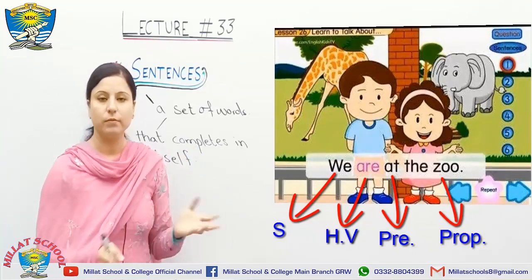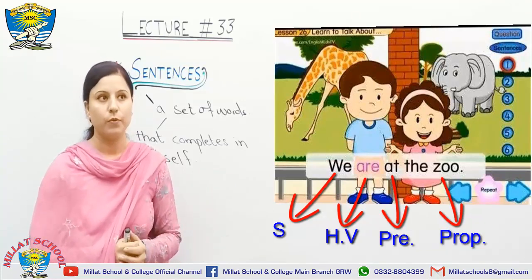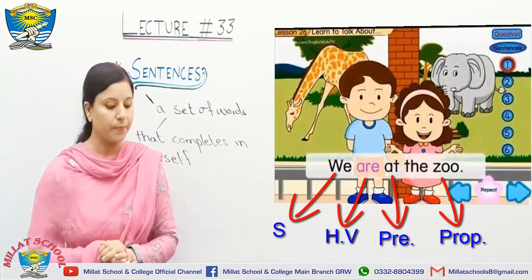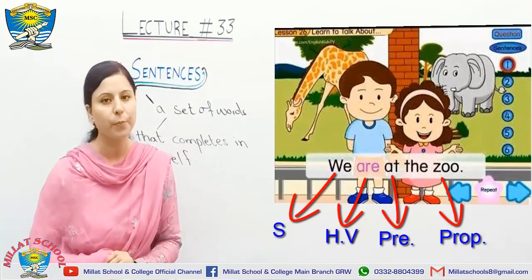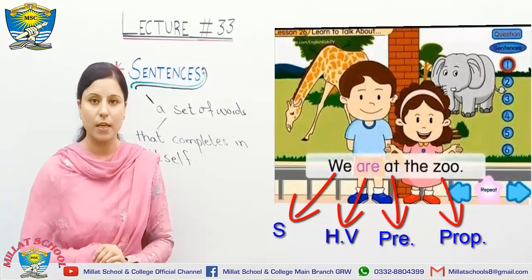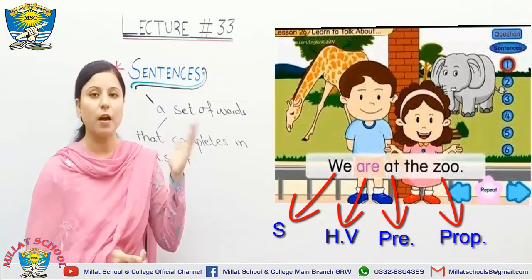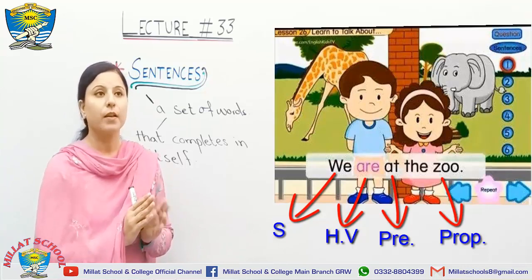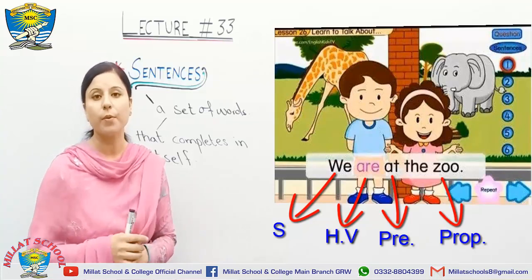If I say just 'we' — no logic. If we say 'we are at' — we are at where? We need some more words to complete the thought. And if we say 'the zoo' separately — no concept. We are just talking about a proper noun without a logical point of view. So it is mandatory to use all the words together: 'We are at the zoo.' That makes it a complete sentence.